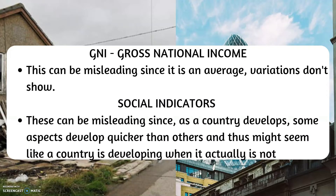For example, GNI – gross national income – can be misleading, since it is an average, so variations don't show. Social indicators can also be misleading, as when a country develops, some aspects develop much faster than others, and thus it might seem like a country is developing when it actually is not.